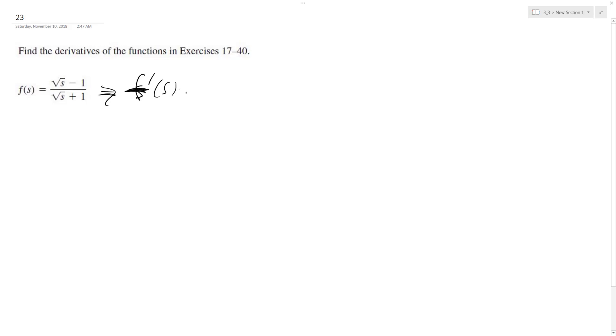This is equal to the derivative of the numerator, which is going to be 1 half S raised to the negative 1 half times square root of S plus 1 minus square root of S.